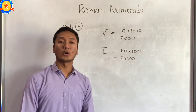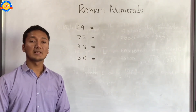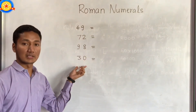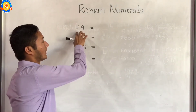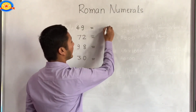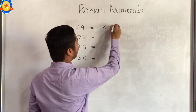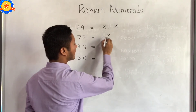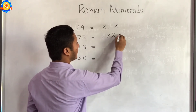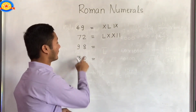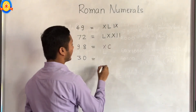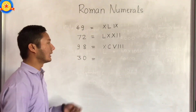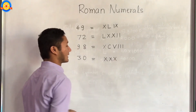Now let's take some examples for better understanding. Write down these numbers in Roman numerals: 49 is written as XLIX. For 72, it is written as LXXII, meaning 50 plus 10 plus 10 plus 1 plus 1 equals 72. For 98, it is written as XCVIII, meaning 90 plus 5 plus 1 plus 1 plus 1 equals 98. For 30, you write XXX, which equals 30.